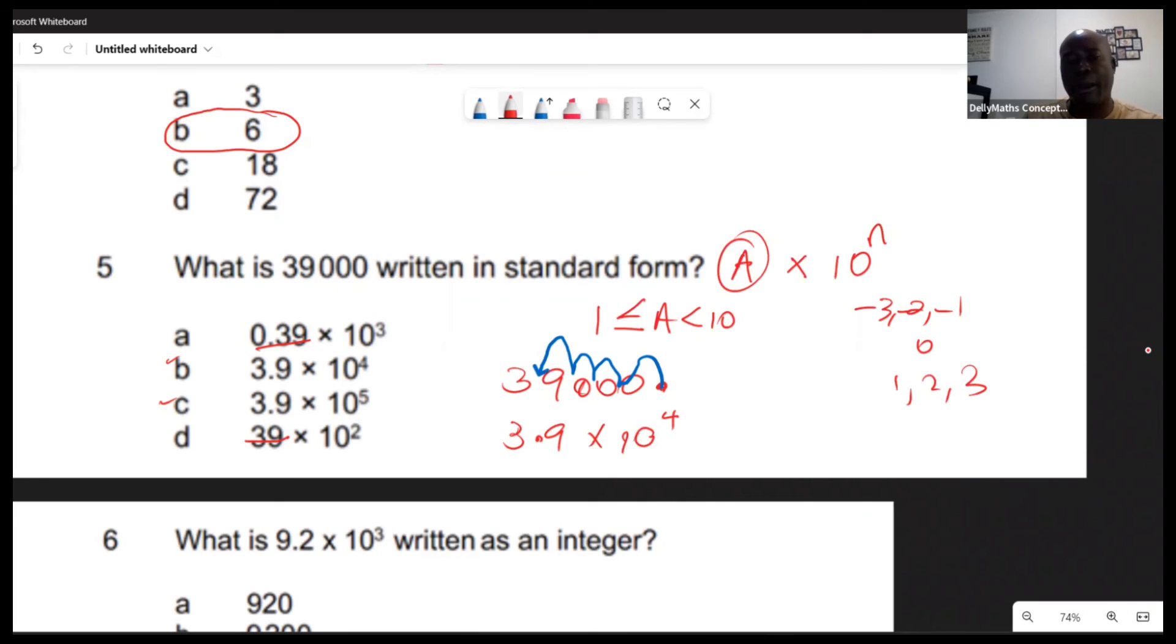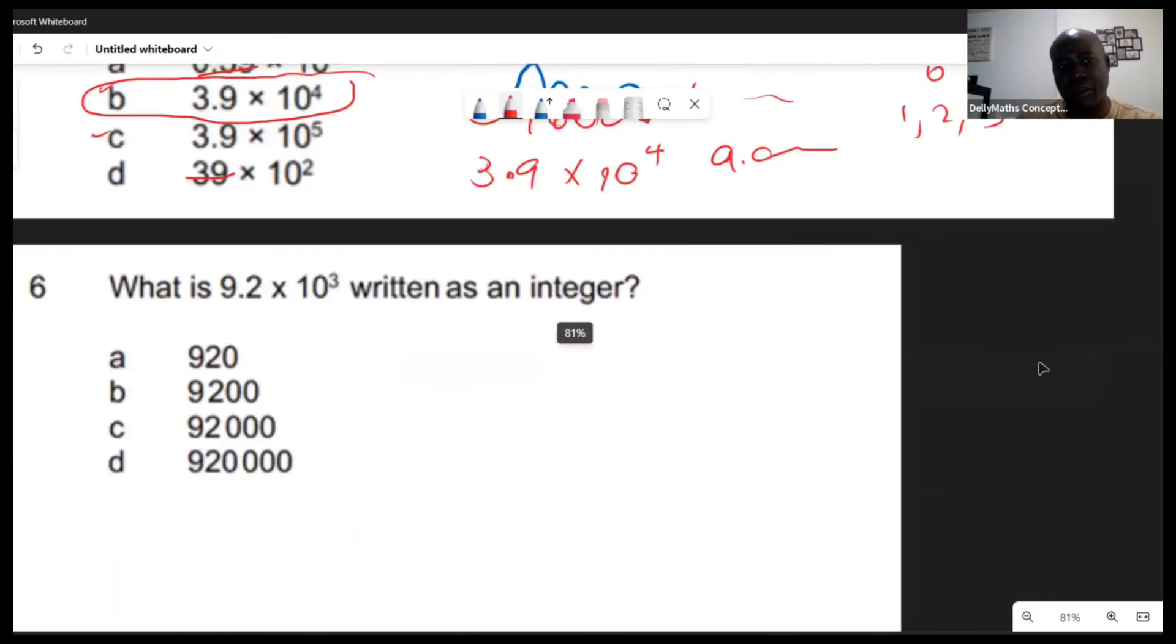Because negative power would be numbers less than one, and you could see that this number was greater than one, so it's a positive power of 4. This would have been the correct response. In standard form, you will always have numbers like 1 point something, 2 point something, 3 point something, up to 9 point something. But the decimal point must come after the first number - the first digit that is not a zero. Let's look at number six.